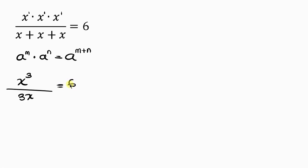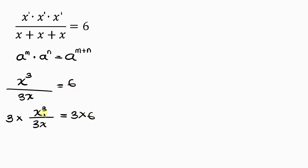Our next step is to get rid of the 3 by multiplying both sides by 3. So 3 times x cubed all over 3x equals 3 times 6. Notice that the 3 here can cancel with this 3, leaving behind x cubed all over x.